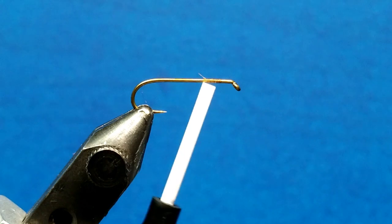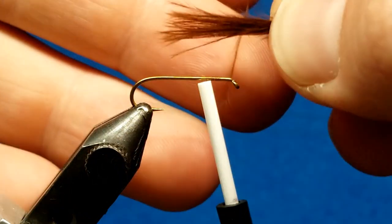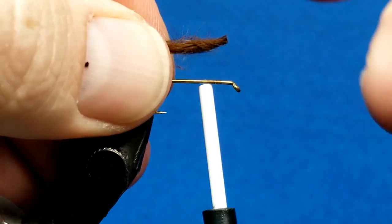Just using brown marabou for the tail and we want this fairly sparse, we don't need a huge clump of it. I want to gauge it out about the same length as the hook shank. Set that back.